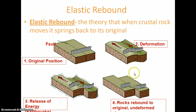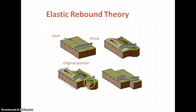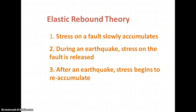It is like an elastic rubber — it can rebound to its original shape. As explained here, the fence moves and then comes back to its original position. This is the elastic rebound theory.